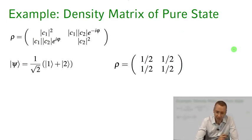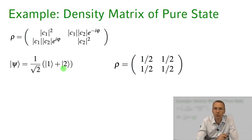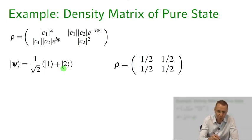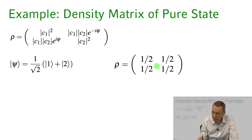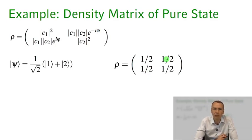Let's look at a specific example: state psi being a coherent superposition of one and two, so the relative phase is zero and well defined. The density matrix has populations one-half on the diagonals. Since phi equals zero, e^(i·phi) equals one, and with |C1| = |C2| = 1/sqrt(2), we also get one-half on the off-diagonals — describing the coherences of the system.